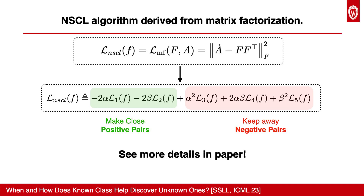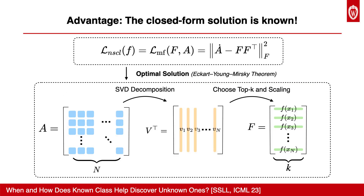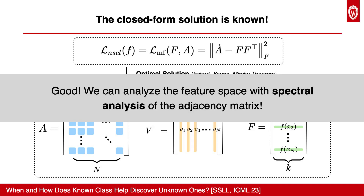Specifically, we can derive our contrastive loss, NSCL, by factorizing the adjacency matrix of the augmentation graph. Due to time limitations, we provide more details in the paper. The exciting aspect of this algorithm is that we can theoretically show the equivalence between the learned feature embeddings and the projection on the top-K SVD components of the normalized adjacency matrix. We can now analyze the feature space with spectral analysis.